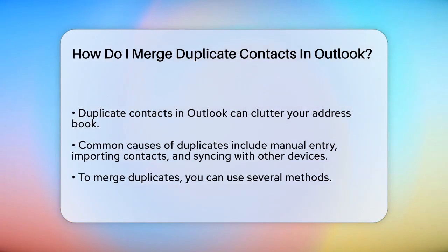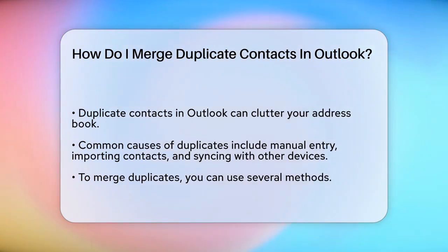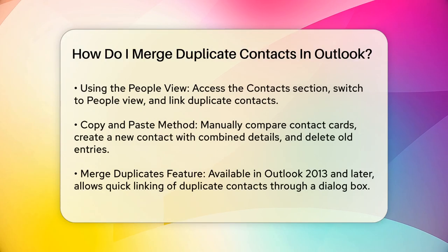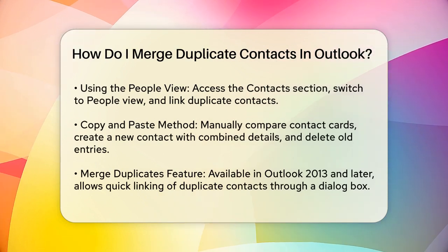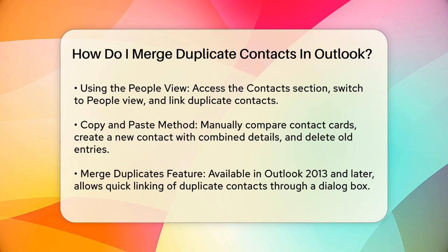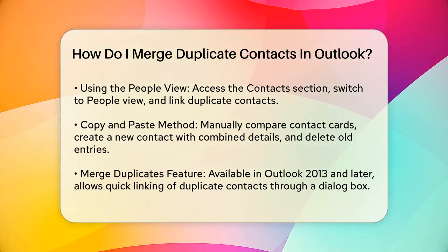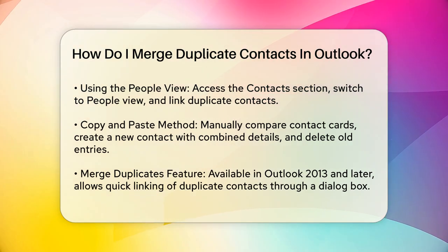Now, let's get to the solutions. There are a few ways to merge duplicate contacts in Outlook. One of the simplest methods is to use the People view. Open Outlook, go to the Contacts section, and click on the People icon. Switch to the People view in the ribbon. Here, you can easily spot duplicate entries. Open the original contact, click on the three dots at the top right corner, and select Link Contacts. Type the name of the duplicate contact in the Find a Contact to Link search bar, select it, and link it. You can link multiple duplicates this way.